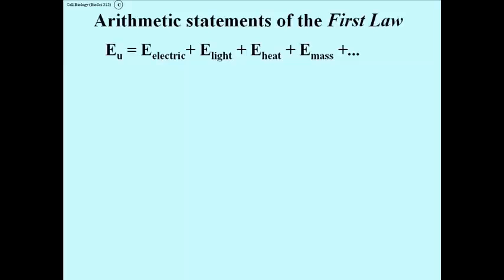Let's try to put into math language what the first law says, and then we'll do the same thing to accommodate the second law. The first equation is very simple: the total universal energy is equal to the sum of all the kinds of energy in the universe at any given moment. You can obviously add other kinds of energy not on this list.